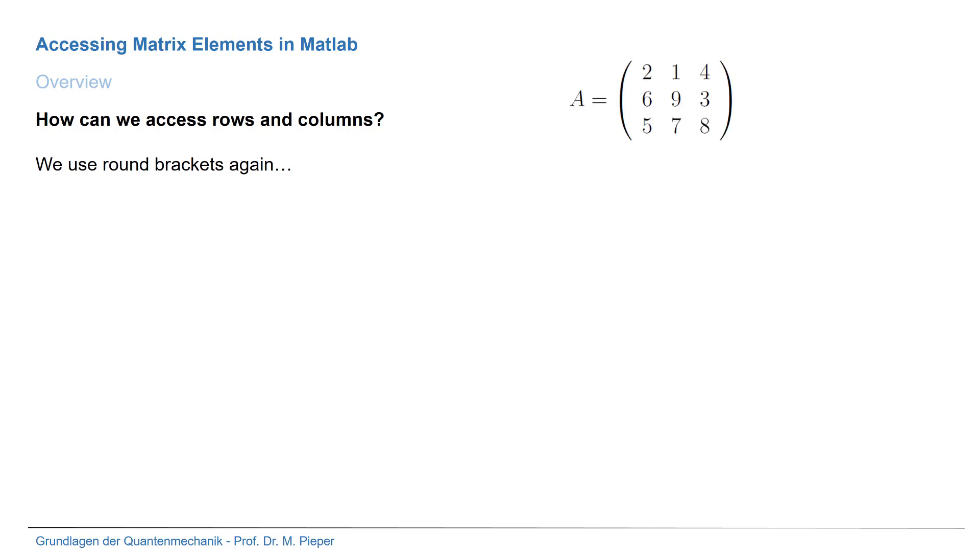Here is an example. It's still the same matrix and maybe we're interested in the second row. How do we do this? Here is the answer. We write A with round brackets. We're interested in the second row so that's why the first index is a 2, and we're interested in all columns. That's why we place at the second position just a colon. A colon stands for take all columns in this case.